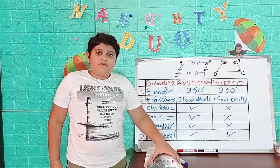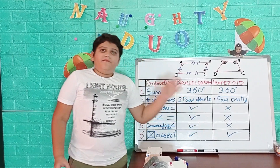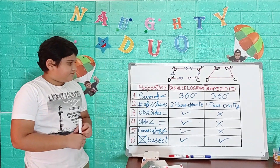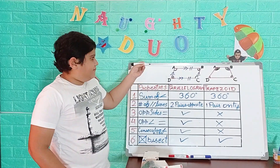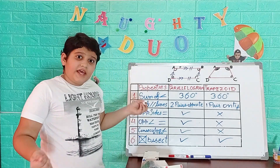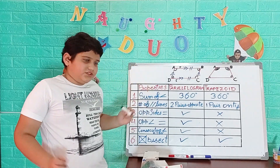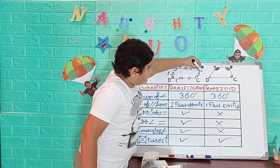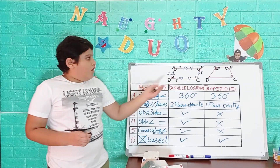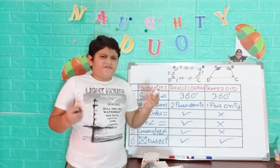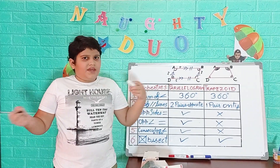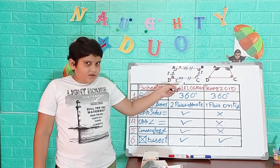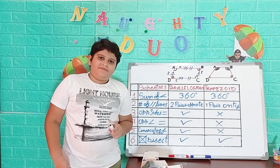In a trapezoid, line AB is parallel to line DC, but AD and BC cannot be parallel because they will meet at a point. So in a trapezoid, there is only one pair of parallel lines. Property three: opposite sides are the same length. In a parallelogram, if line AB is 5 cm, then line DC will also be 5 cm. But for the trapezoid, all sides can be different — if AB is 5 cm, DC can be 7 or 8 cm. So this property is true for the parallelogram and false for the trapezoid.